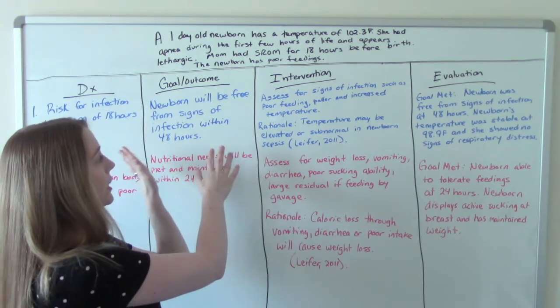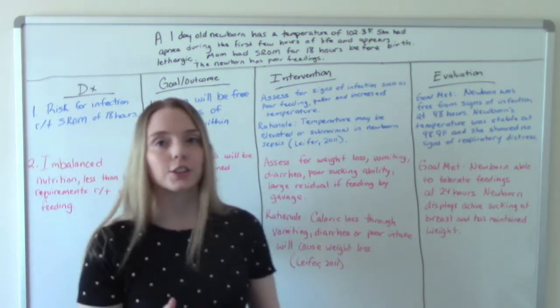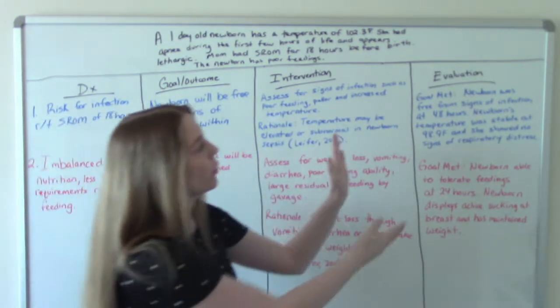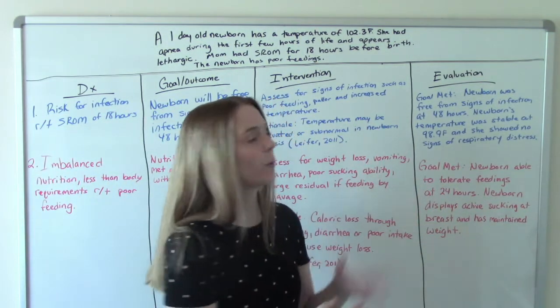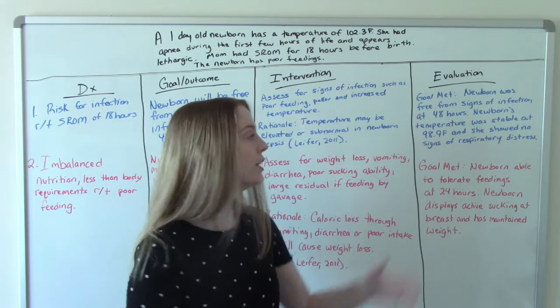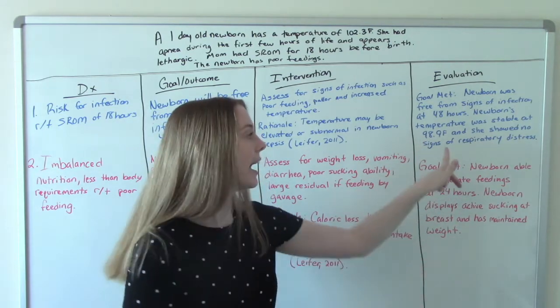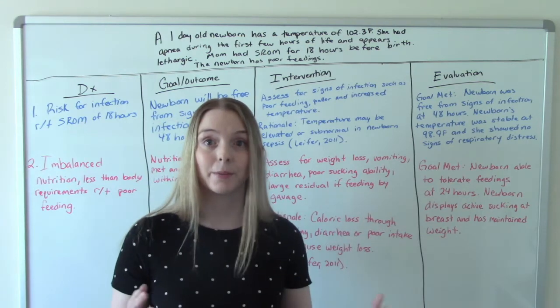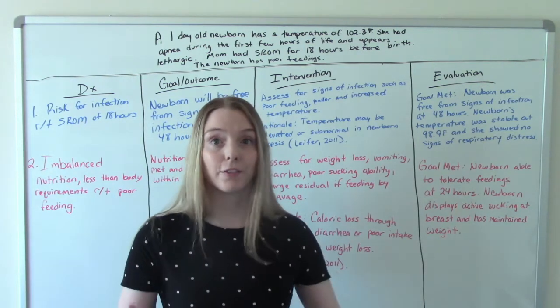So in this evaluation, we can say that our goal was met. We're going to say exactly what that goal was. And then we're going to show some proof of it, right? Because in our goal, we said the signs of infection. So in our evaluation, we're actually showing the proof of those signs. So the temperature normal, not having any apneic spells, things like that. Those are good signs that baby is over the hump and getting better from the infection.